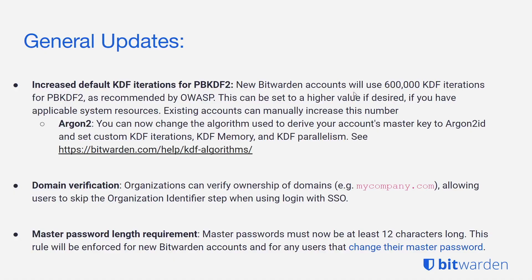Diving into the last six months of new and exciting features: we've increased the KDF iterations for PBKDF2. New Bitwarden accounts will use 600,000 rounds of KDF iterations for PBKDF2, as recommended by OWASP. Previously, this was set to 100,000 rounds of iterations. Regardless, if you want to update your iterations — whether at 100,000 or 600,000 rounds — you can do this as long as you have the applicable system resources. You can alternatively choose to leverage Argon2 as the algorithm to derive your account's master key and set custom KDF iterations, memory, and parallelism. That can all be reviewed on our KDF algorithms help page.